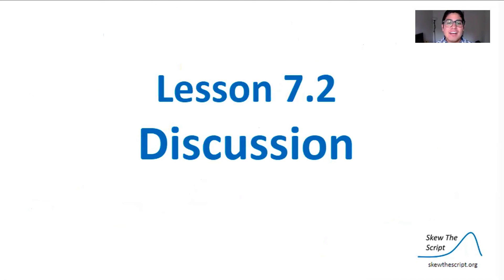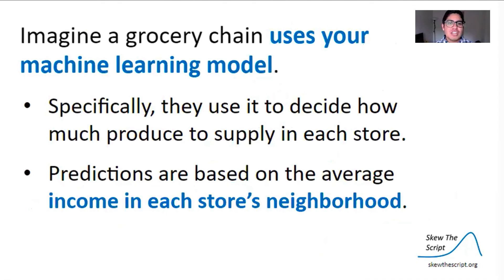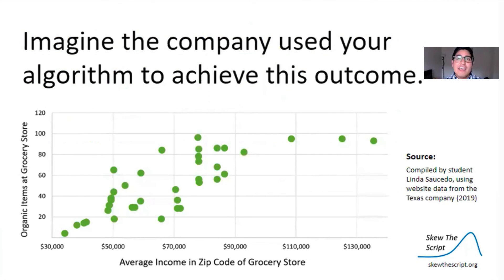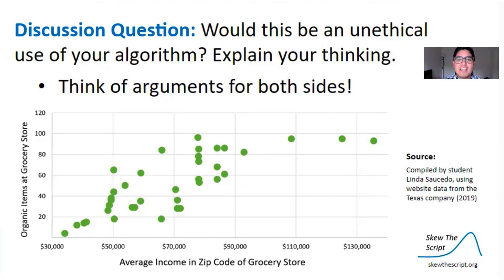Now let's think about this phenomenon more deeply. Imagine a grocery chain uses your machine learning model to decide how much produce to supply in each store, with predictions based on the average income in each store's neighborhood. Here's some real data from a large San Antonio grocery chain showing the number of organic food items offered at each location in the city — the larger the income of the neighborhood, the more organic items are available. Would this be an ethical use of your algorithm? Consider arguments for both sides by thinking about the perspectives of the grocery owner and their customers.